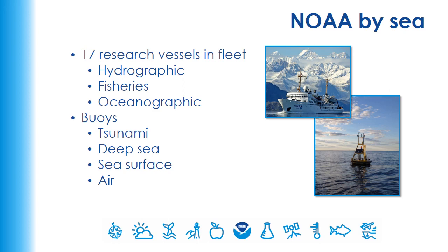NOAA also collects data from the ocean. NOAA has 17 research vessels in our fleet. These vessels collect hydrographic, oceanographic, and fishery data. We also have buoys that collect data, including tsunami monitoring buoys and ones that can collect data from the deep sea or the sea surface. Some buoys even collect data from the air.